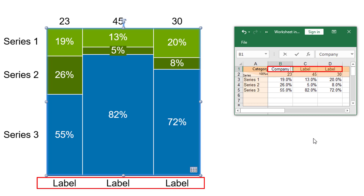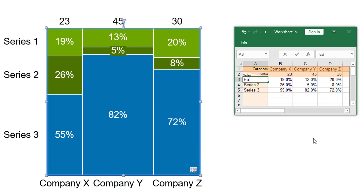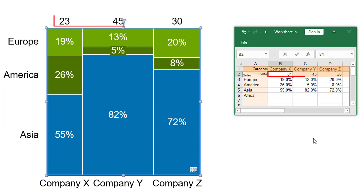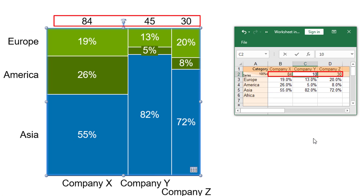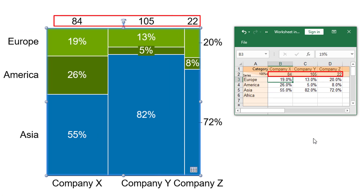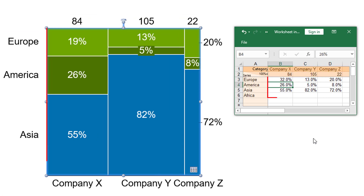Type in your data starting with the company names as category labels. Then add the market regions for the series labels, and insert the total revenue of each company into the width row. Finally, type in the percentage values.